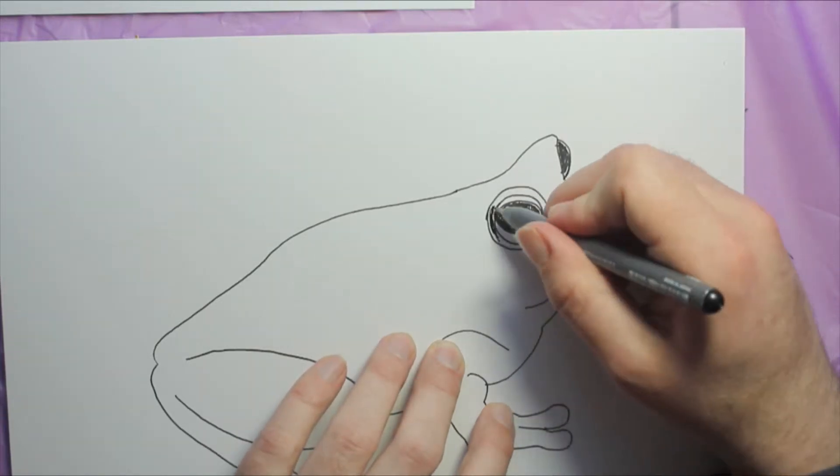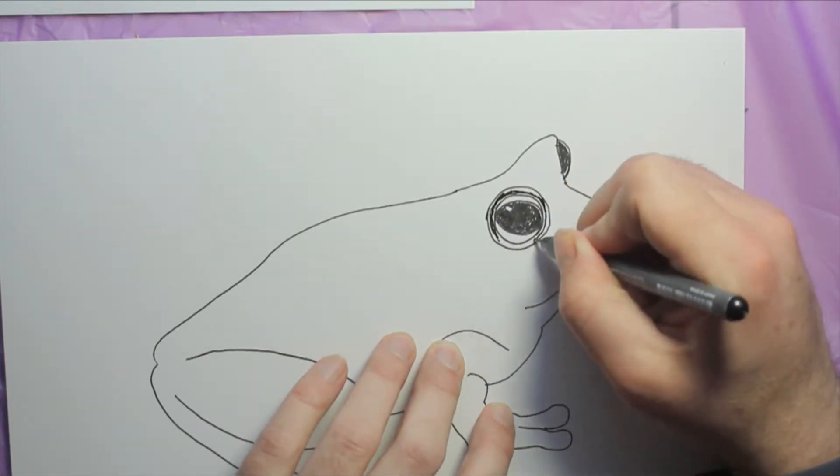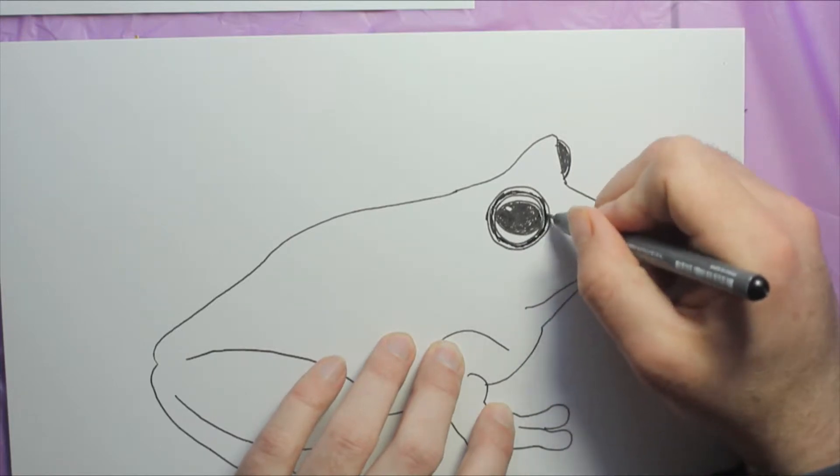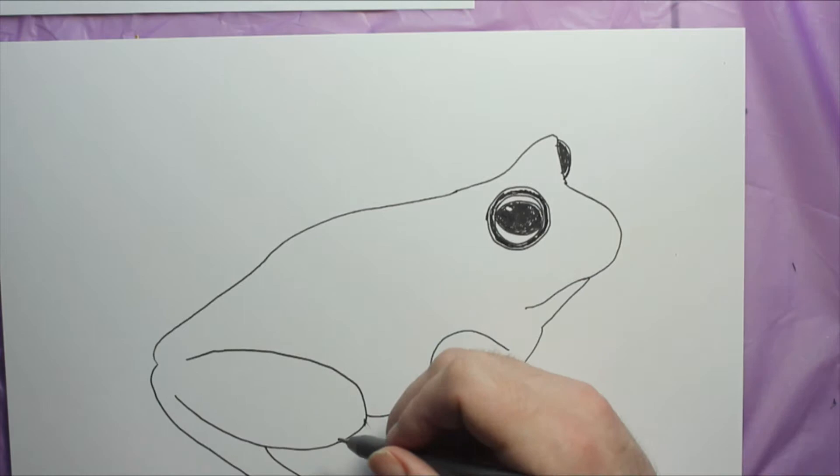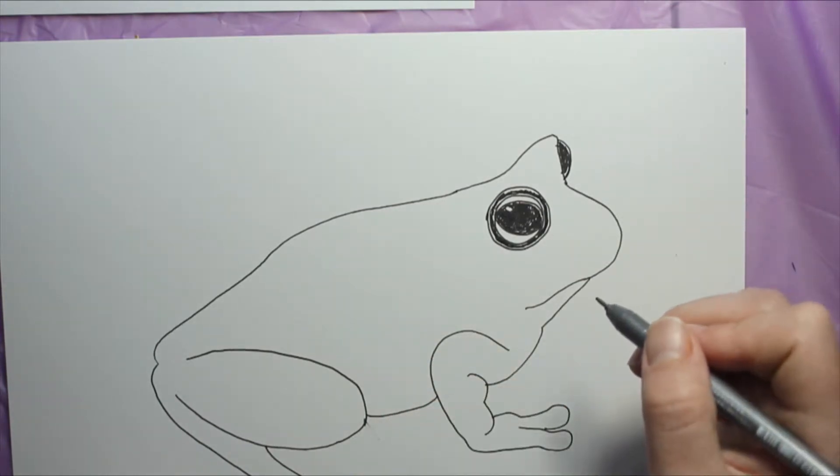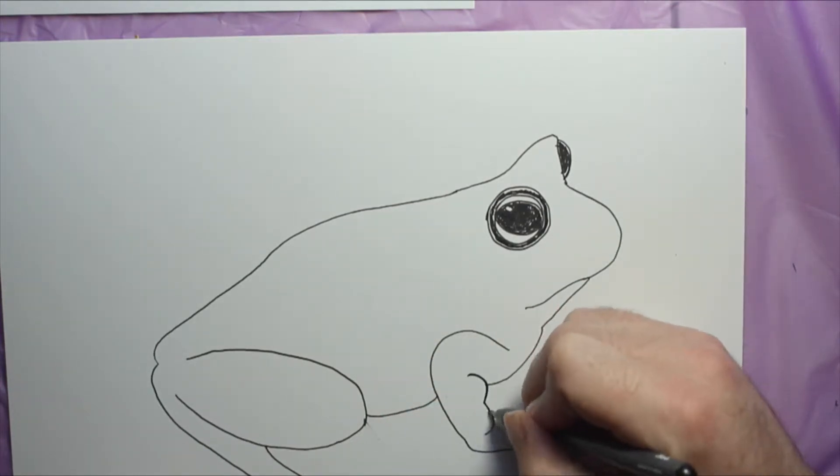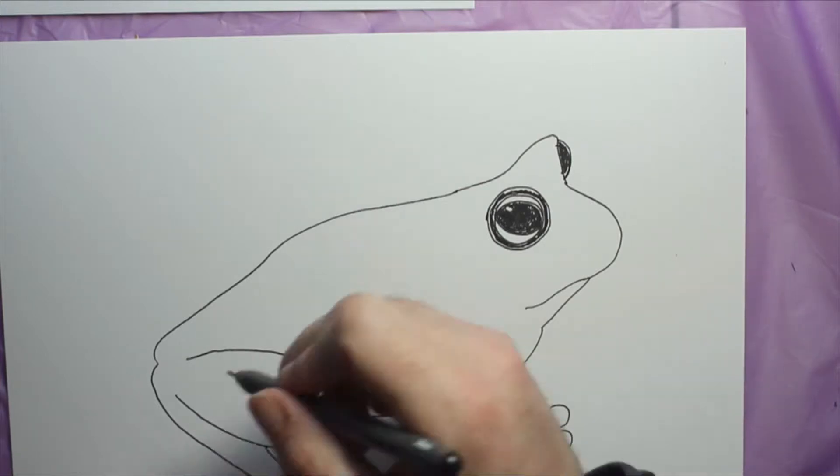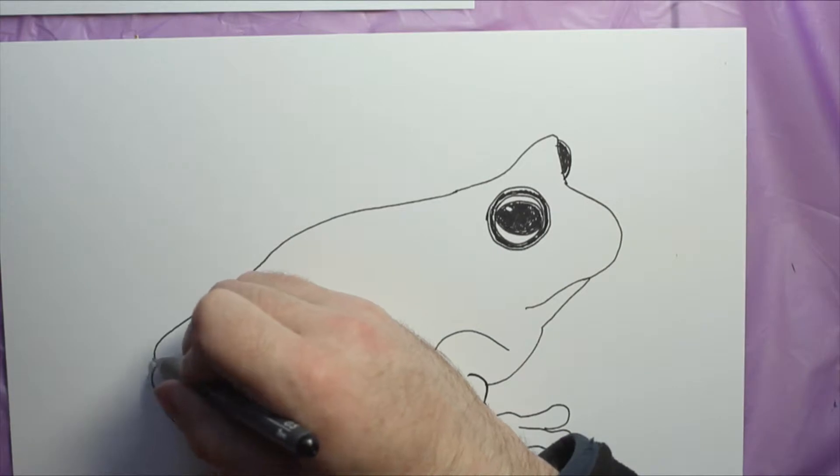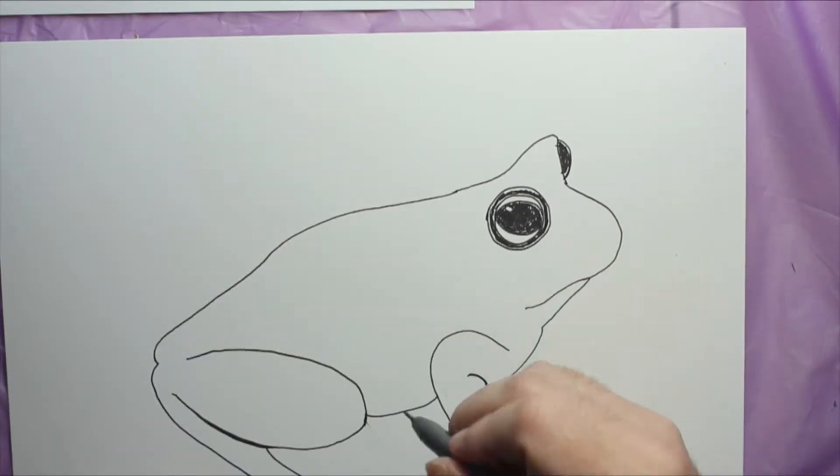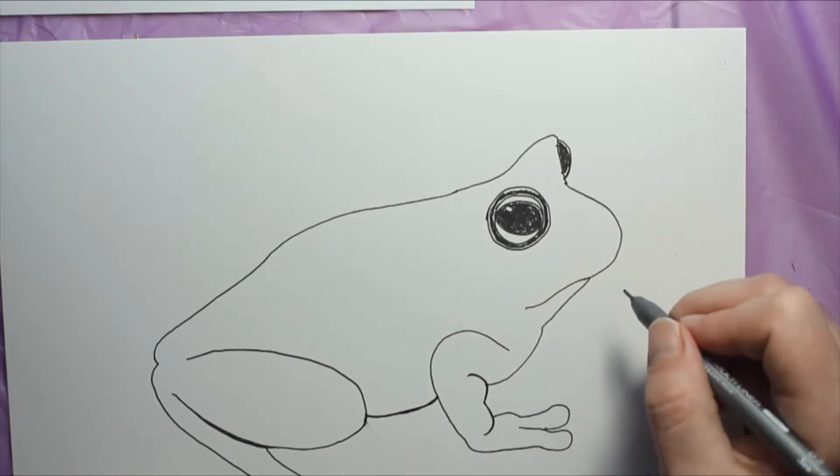I added a little highlight in the eye there, and actually that black rim around the eye actually isn't the eyeball. It's that white part and then the pupil in the middle. I'm gonna add a little variation to the thickness of the black line.